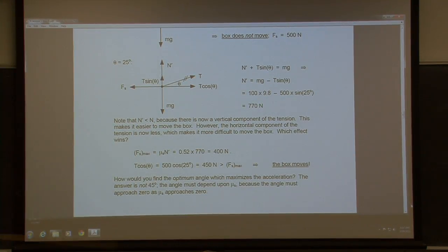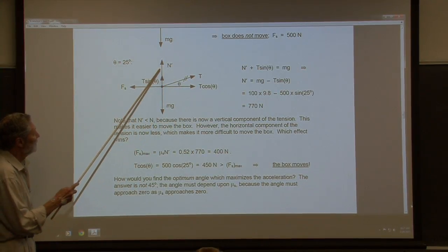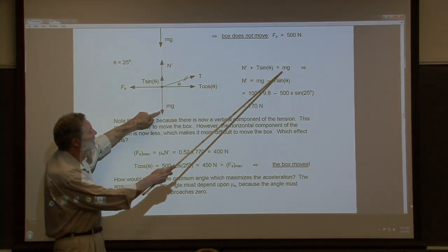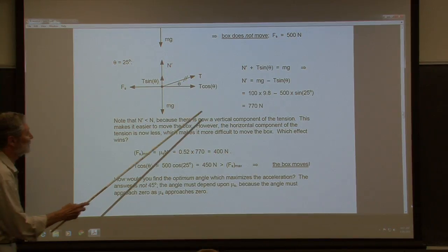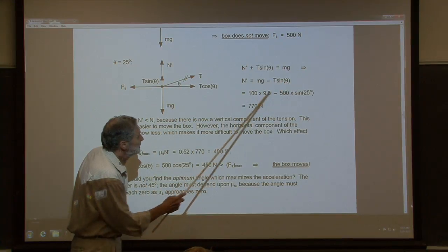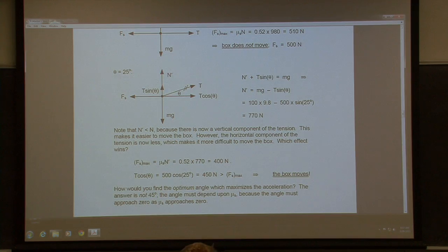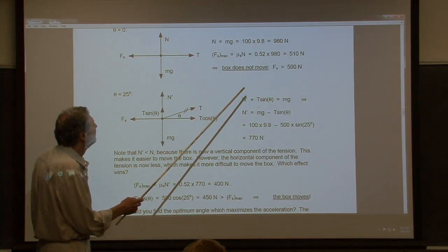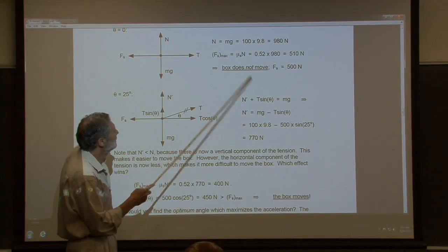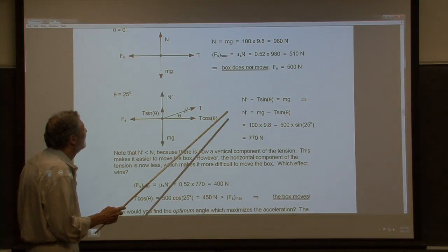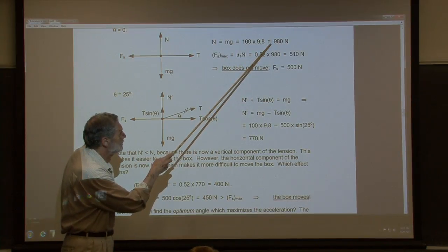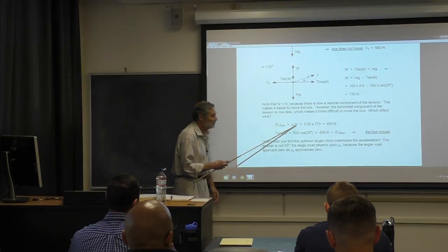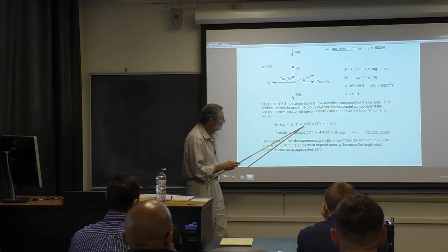Here's the force diagram. Vertically, there's no acceleration, so my new normal force plus the vertical component of the tension is balanced by mg. We know the numbers. The new normal force is 770 newtons — before it was 980 newtons, so it's less now. The maximum static frictional force is mu times the new normal force, giving us 400 newtons.